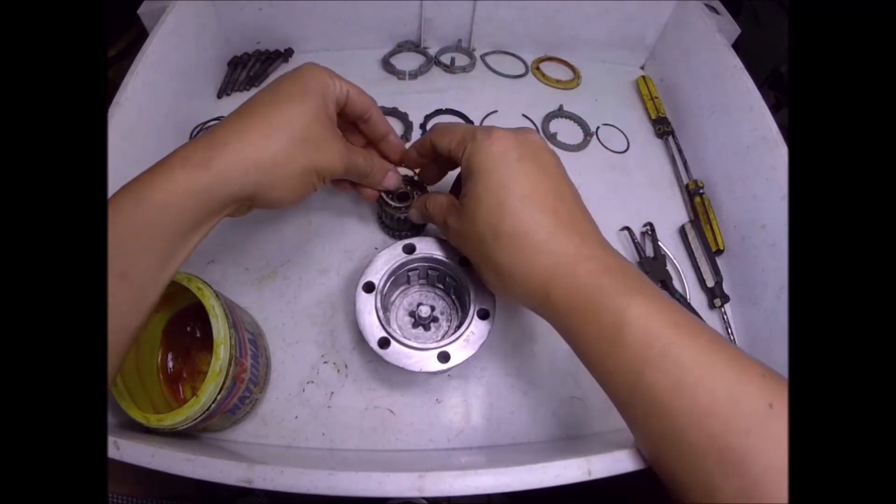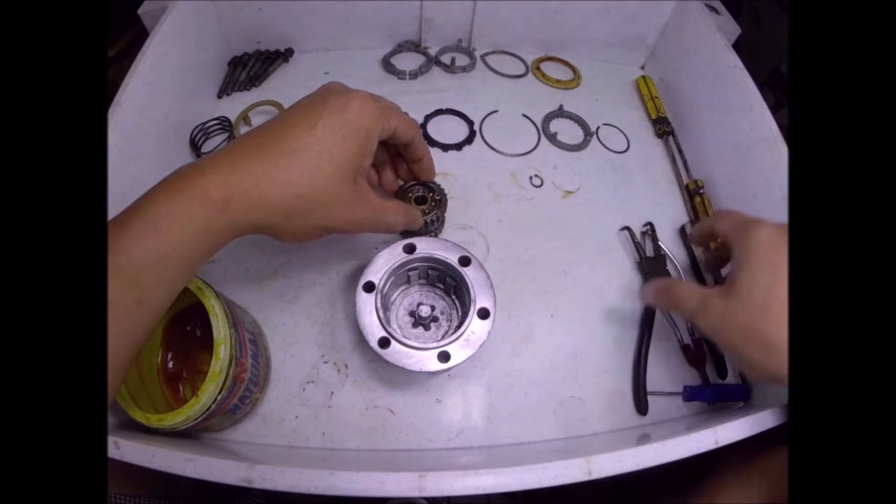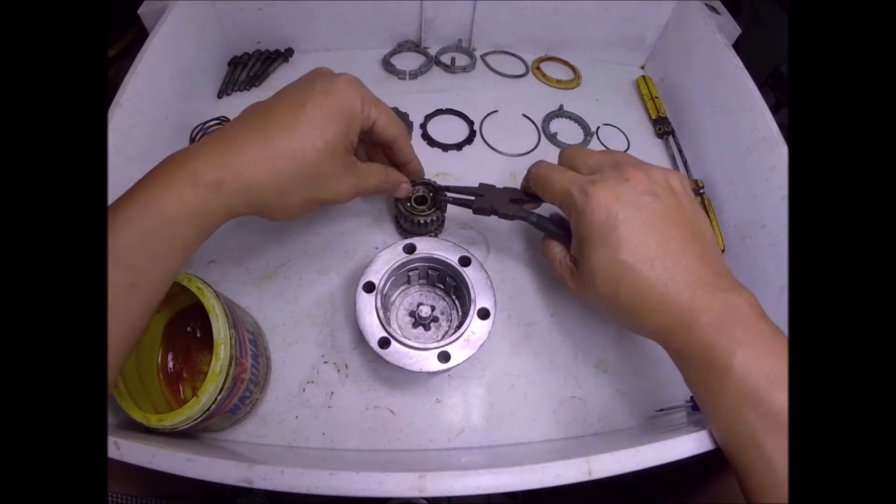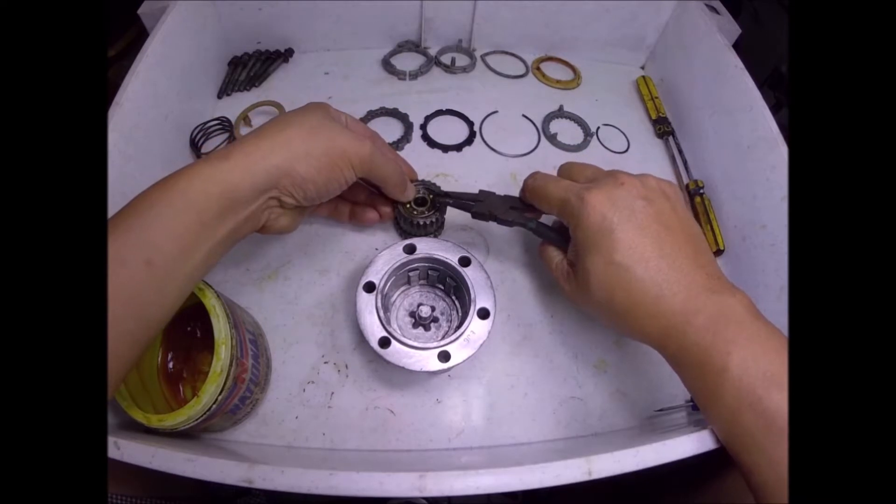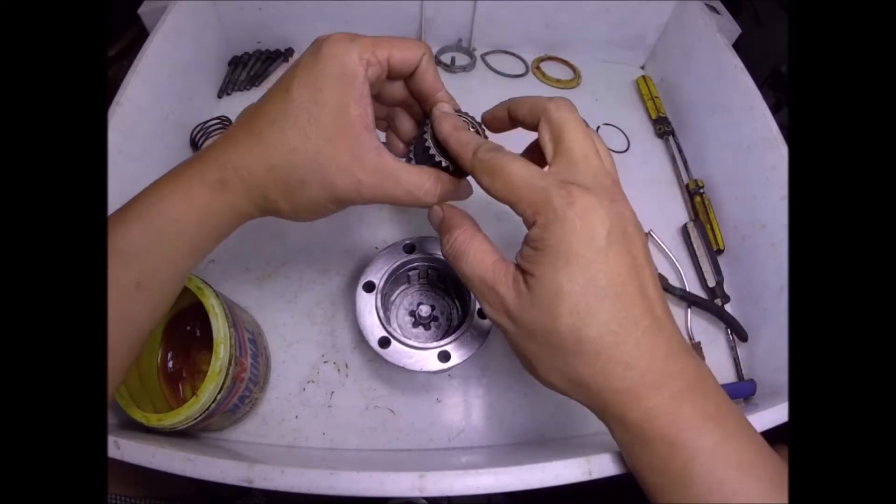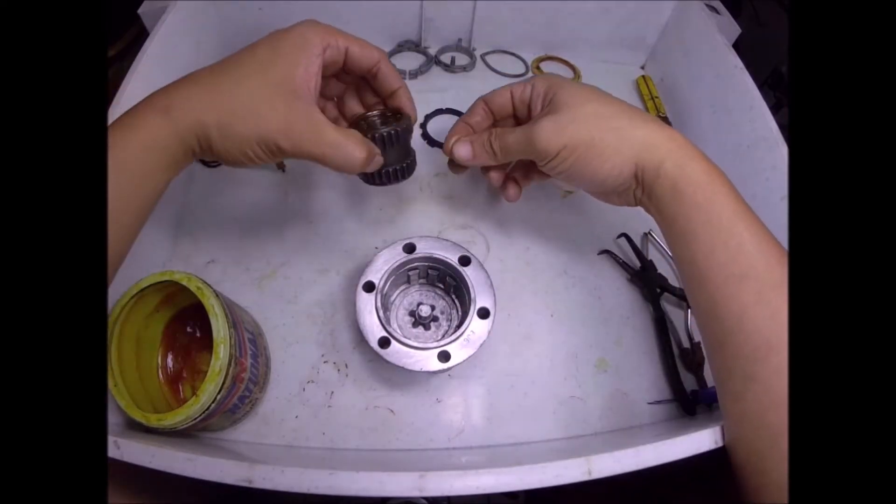And to install this circlip back to hold the bearing in place. There you go. And now this assembly is finished.